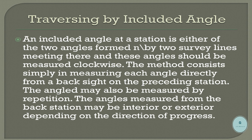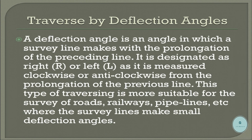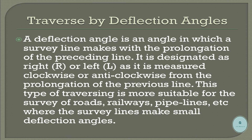Traverse by deflection angles: a deflection angle is the angle which a survey line makes with the prolongation of the preceding line. It is designated as right or left, as it is measured clockwise or anti-clockwise from the prolongation of the previous line. This type of traversing is more suitable for the survey of roads, railways, pipelines, etc., where the survey lines make small deflection angles.